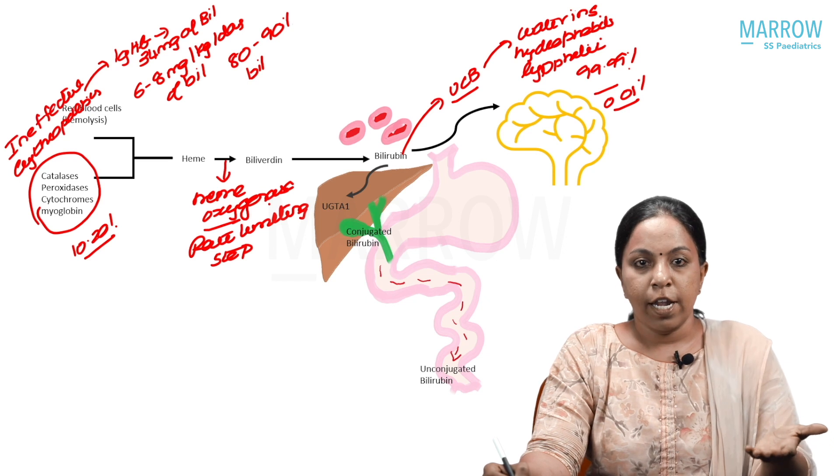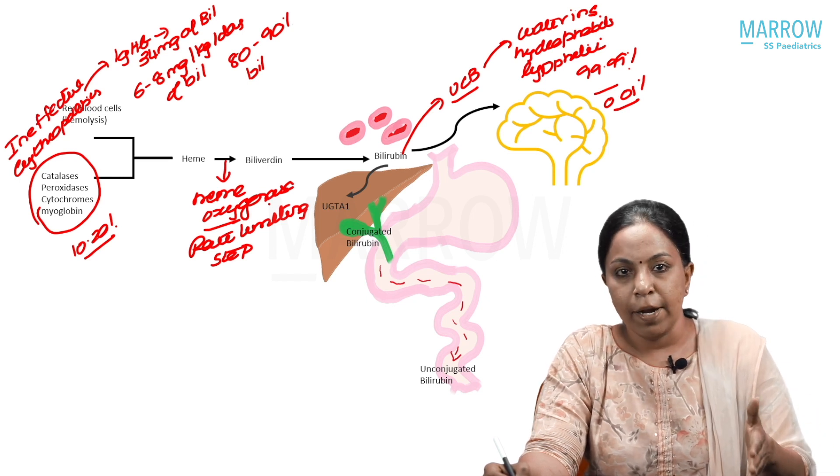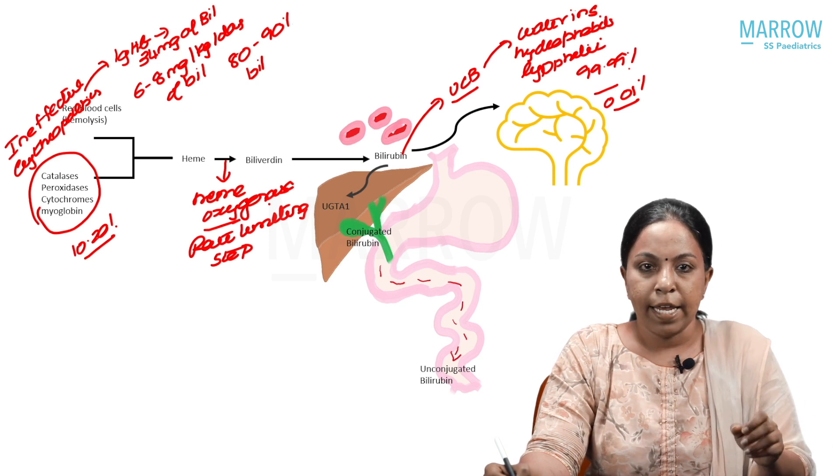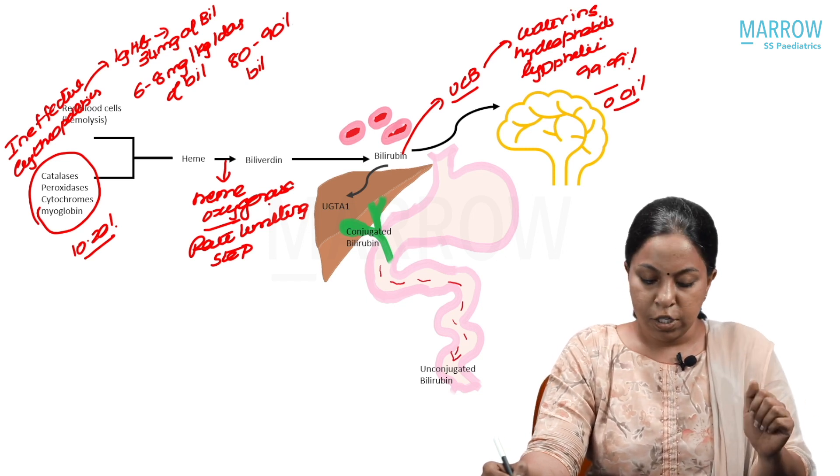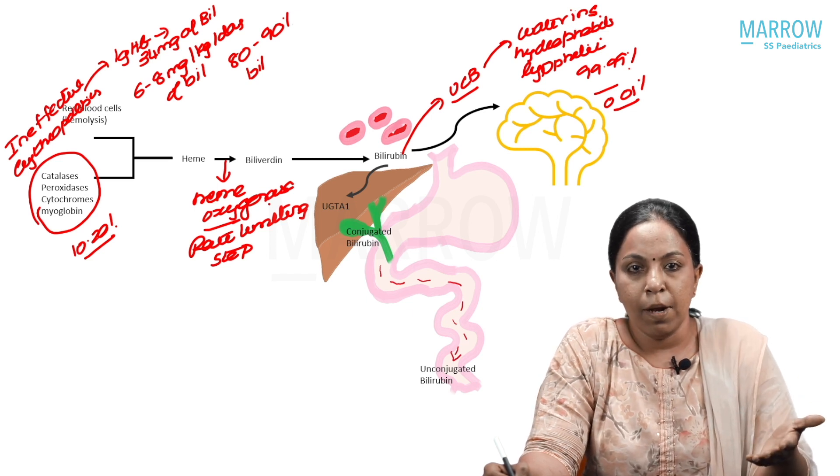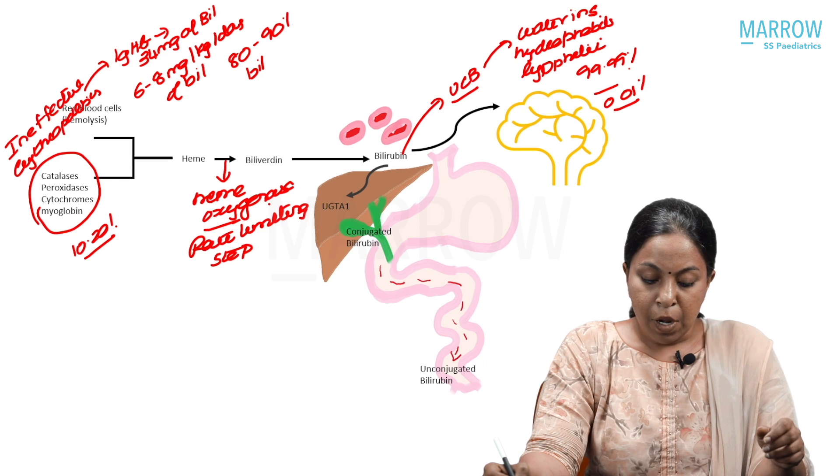When this proportion, that is the unbound unconjugated bilirubin increases, that is when they cross the blood-brain barrier and cause neuronal toxicity. We will be reading later what causes this dissociation of unconjugated bilirubin from albumin.